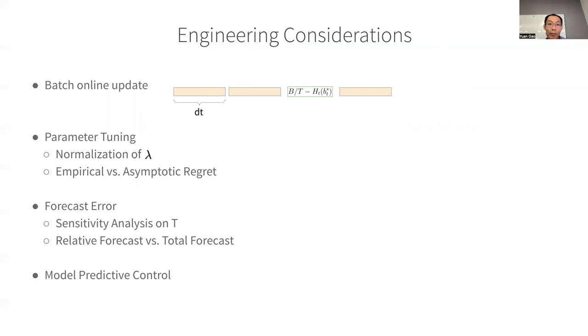Parameter tuning is probably one of the most tedious yet important things practitioners do at work. For the millions of ads, there can be an ideal set of parameters for each of them, but it's just not feasible in practice. We find that the normalization of lambda is very helpful in that sense, since the scale of lambda varies a lot across advertisers.